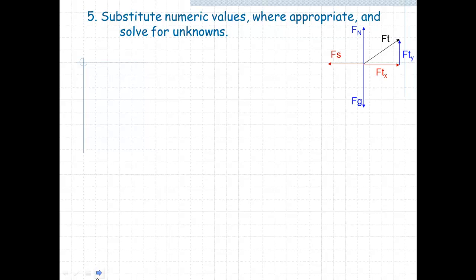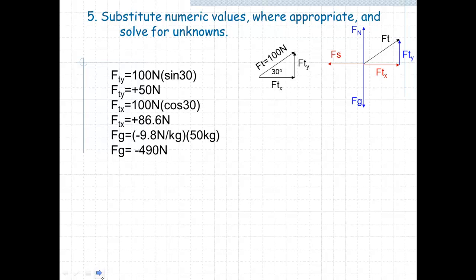The next step is to substitute numeric values where appropriate and solve for unknowns. What I want to do in particular is look at this triangle, this right triangle that has a force that's off axis. We're told in the problem that it's a 100 Newton force. Since we know the hypotenuse and the inside angle, that should allow us to solve for FTX and FTY.